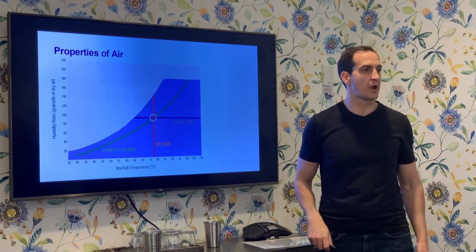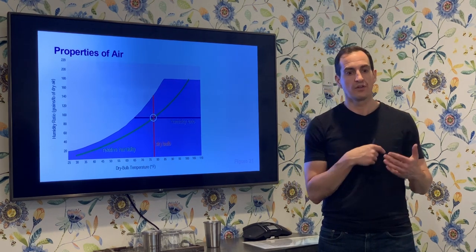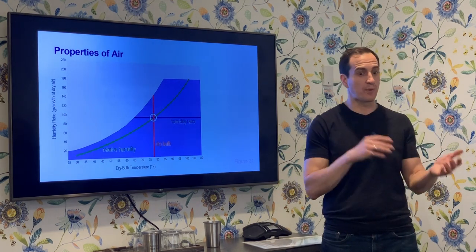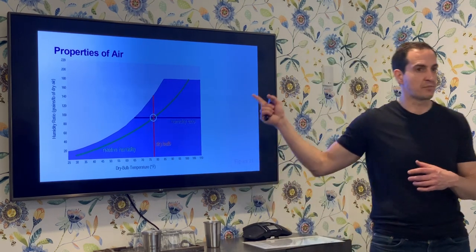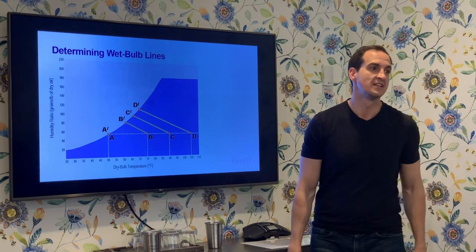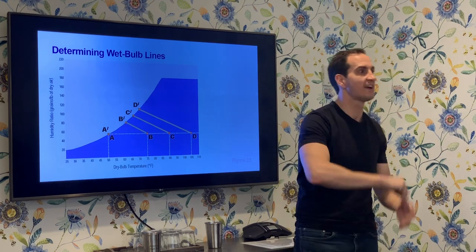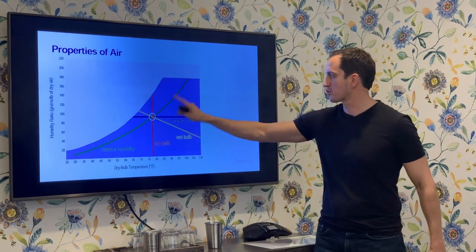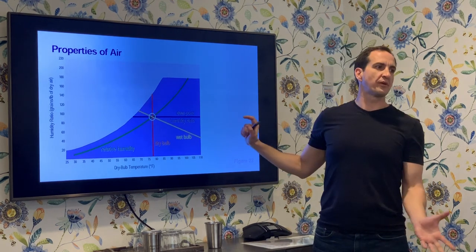We've talked about dry bulb, wet bulb, dew point, absolute humidity, relative humidity, and humidity ratio. There's one more property we need to talk about: as you heat air up, it occupies more cubic feet per pound. So if I'm moving air through a fan at a certain temperature and then cool that air down, I'll be moving heavier air relative to the same volume. The other thing you'll find on the chart are specific volume lines — cubic feet of air per pound of air.